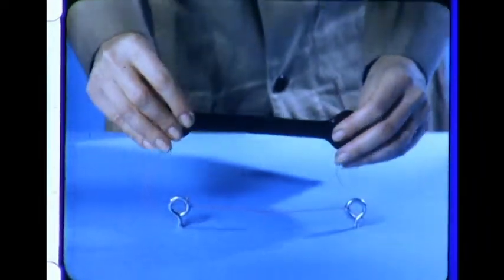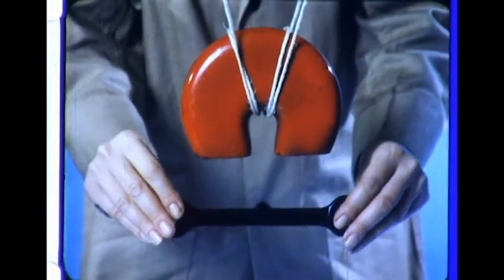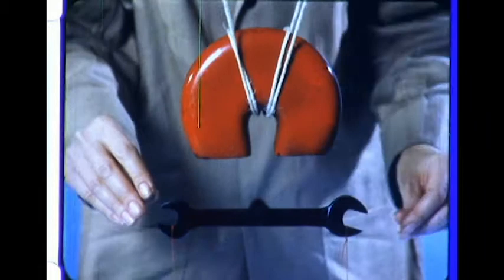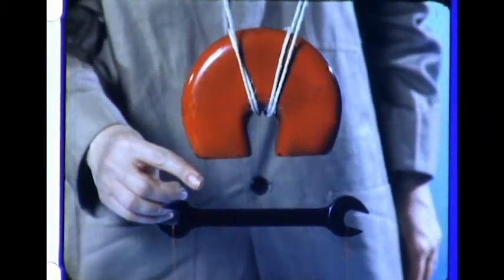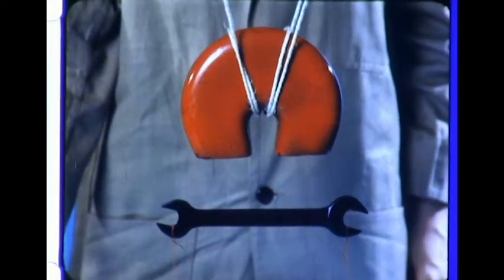Let's tie this steel wrench to the table. When it is brought into the magnetic field, it is held up in the air. Now let's pass some things between the magnet and the wrench to see if the magnetic force will go through them.